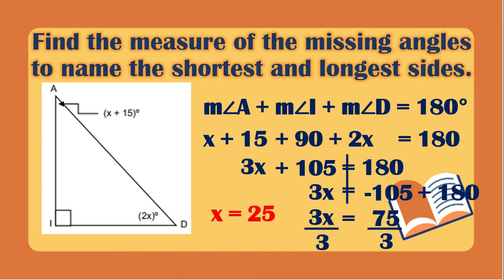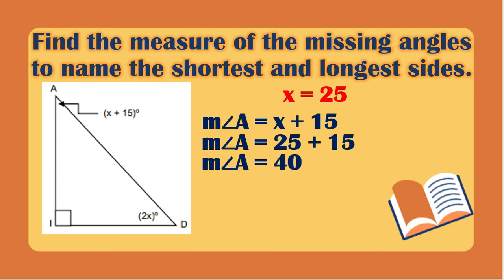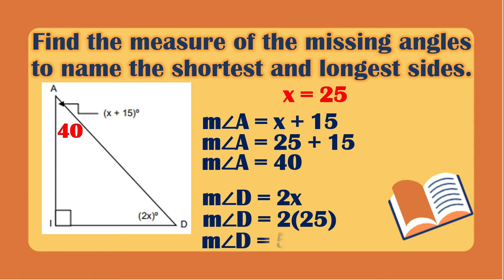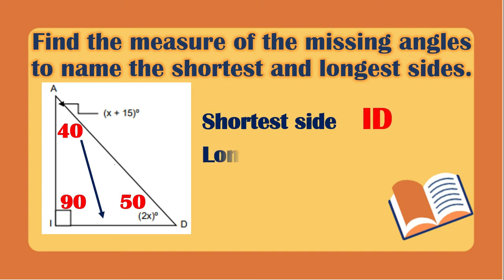So the value of X is 25. Now let us find each angle. The measurement of angle A is X plus 15, which is 25 plus 15, giving 40 degrees. The measurement of angle D is 2X, which is 50 degrees. The measurement of angle I is 90 degrees. Looking at the angles, the smallest angle is angle A at 40 degrees, so the shortest side is ID, which is opposite angle A. The largest angle is angle I at 90 degrees, so the longest side is AD.